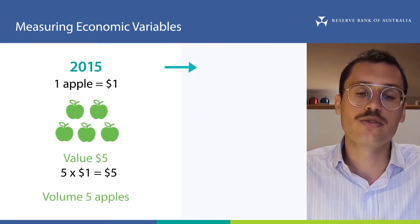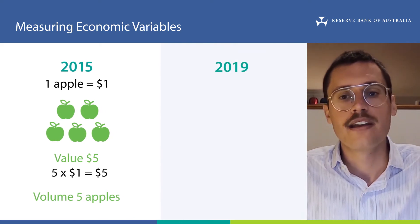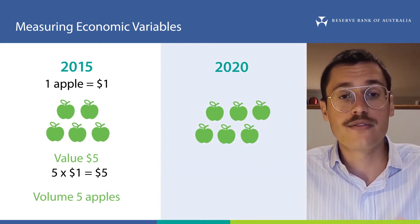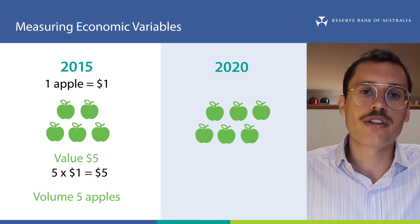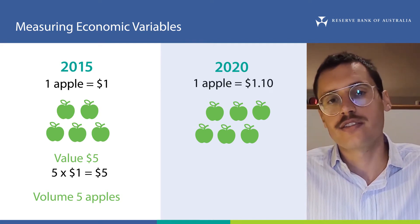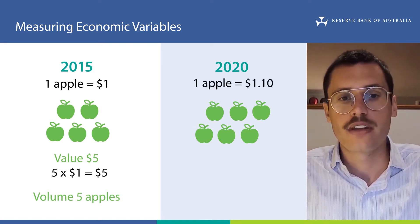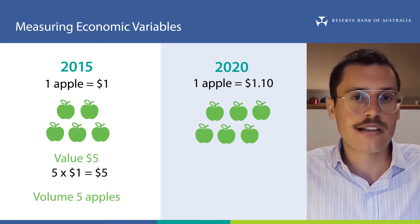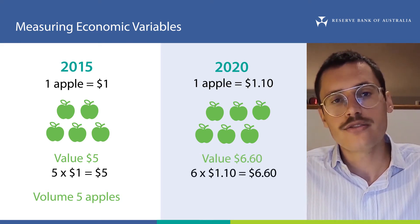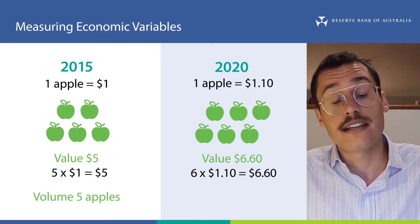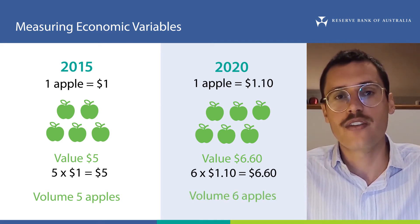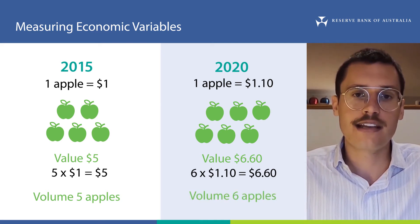Let's fast forward now to 2020. Say our apple economy has grown so it now consists of six apples. Apples have also become more expensive so they now cost $1.10 instead of $1. How has the size of our economy changed? Well, in value terms the size of our economy is now $6.60, and in volume terms the size of the economy is six apples.